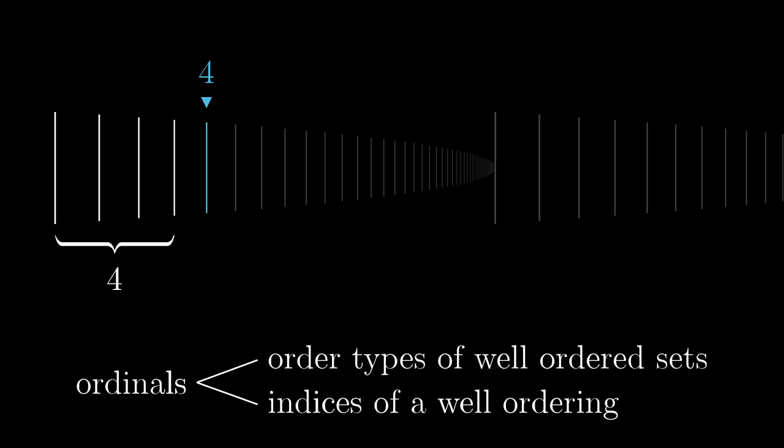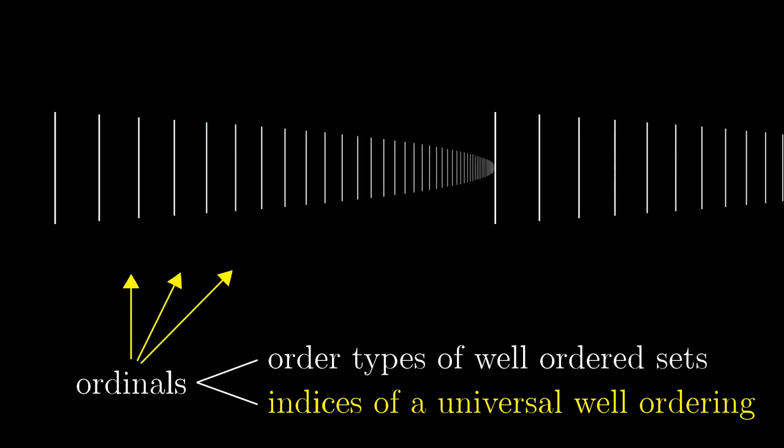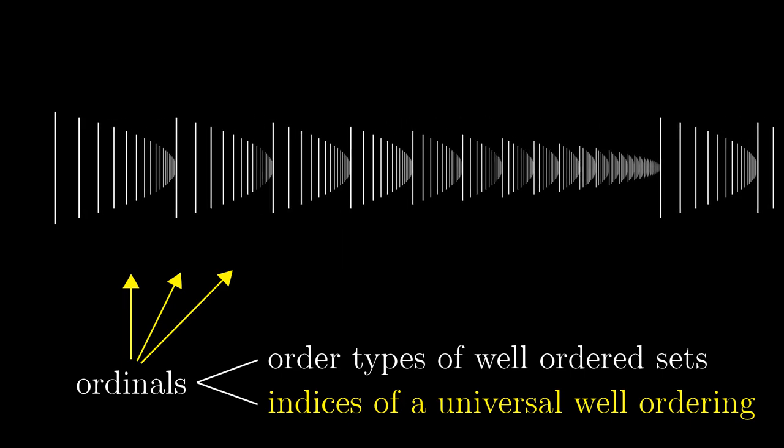Alright, ordinals can play two roles, either order types of well-ordered sets or indices. But indices of what exactly? It turns out that it doesn't really matter. Every ordinal can play the index role somewhere, in any larger ordinal. If we are interested just in the outcome of the transfinite recursion at, say, point 4, it doesn't matter how long the underlying set is. The recursion runs four successor steps to that point every time. So ordinals represent indices of universal well-ordering. Ordinal numbers form the world of transfinite recursion as particular points of it. This world of ordinals is unlimited. For some reasons which will be discussed in later videos, we are not even allowed to make a set of all of them. But it doesn't prevent us from running a recursion on all the ordinals.